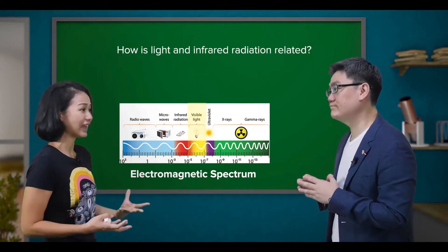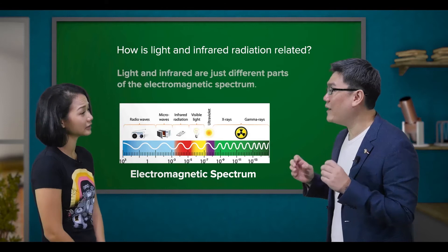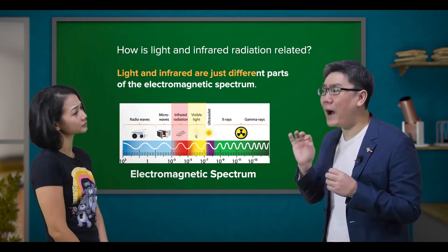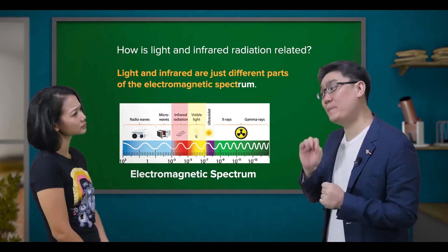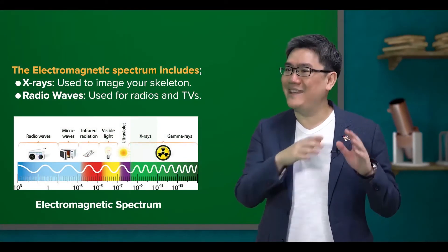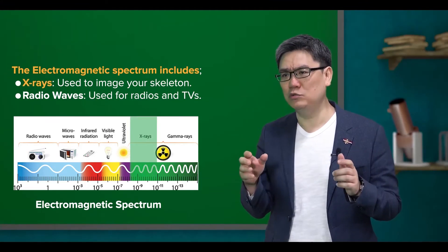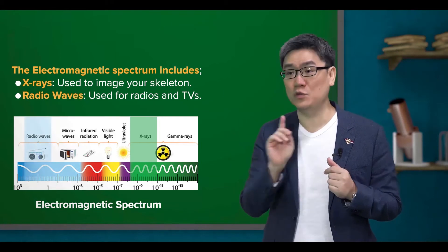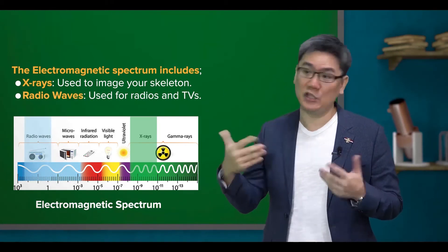But how is light and infrared radiation related? Well, light and infrared radiation are just different parts of the electromagnetic spectrum. This spectrum covers everything from the X-rays you use to image your skeletons to radio waves you use to listen to the radio in your car.